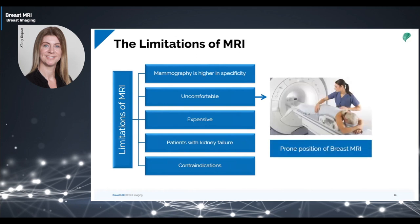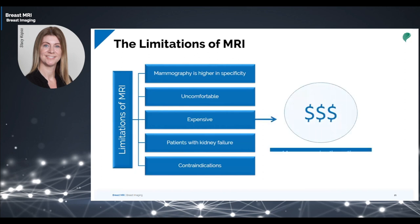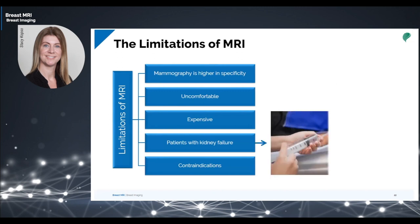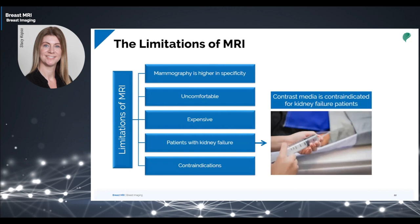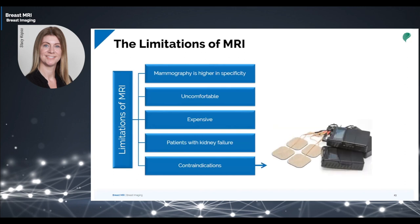MRI causes discomfort for older and obese patients because of the prone position required and lengthy scan time. MRI is also more expensive than mammography and ultrasound. According to the ACR, contrast media is not safe for patients with kidney failure because of the increased risk of a rare but serious disease called nephrogenic systemic fibrosis in people with severe kidney failure. Nephrogenic systemic fibrosis triggers thickening of the skin, organs, and other tissues. MRI is contraindicated for patients with pacemakers and metallic implants. Implanted devices, which include both pacemakers and defibrillators, can be damaged by an MRI scan. The powerful magnets can trigger changes in a pacemaker setting, which may pose a risk for certain patients, such as those who are completely dependent on their pacemaker.